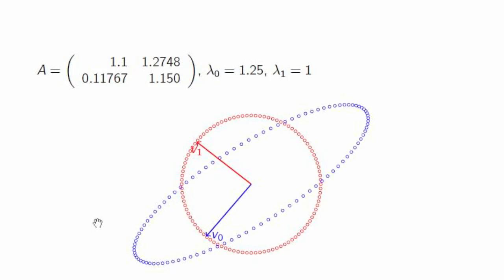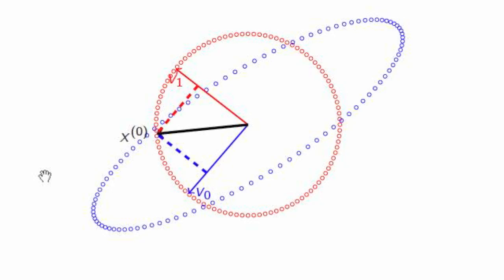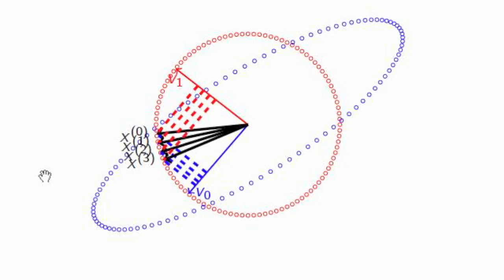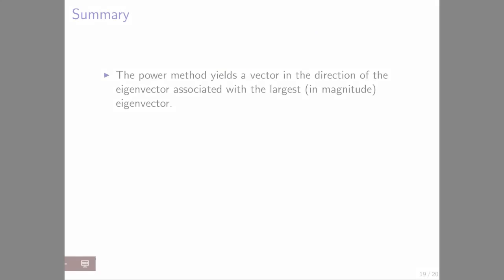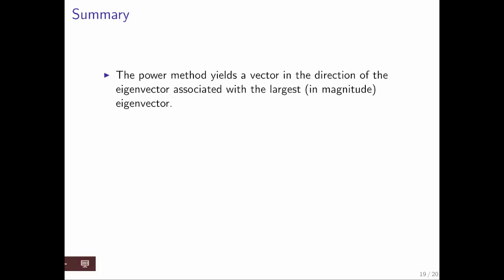Now let's see what happens if we modify our power method so that every time we hit it with A, we also scale our vector back to length 1. Here's our initial vector — hit it with A, divide by its length. At every step our current vector is of length 1, but little by little you start pointing more and more in the direction of v0. In summary, the power method yields a vector in the direction of the eigenvector associated with the largest in magnitude eigenvalue, though there are some circumstances where that doesn't happen.